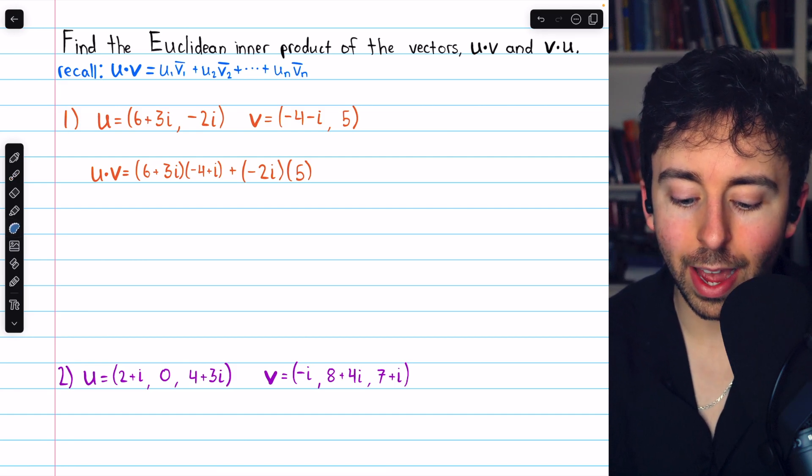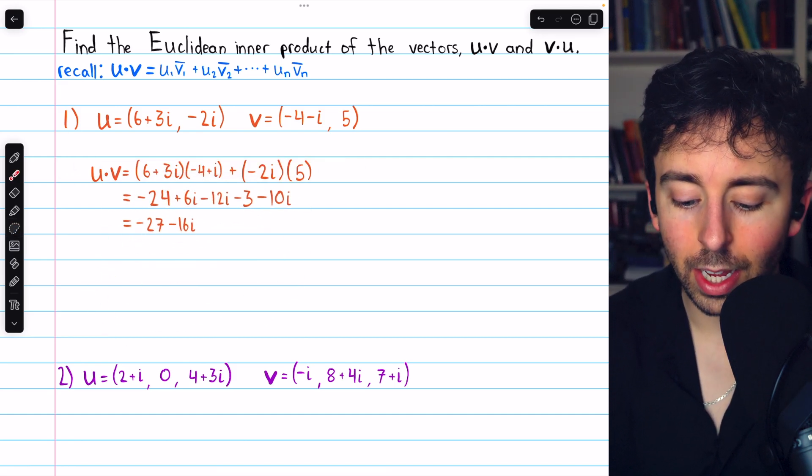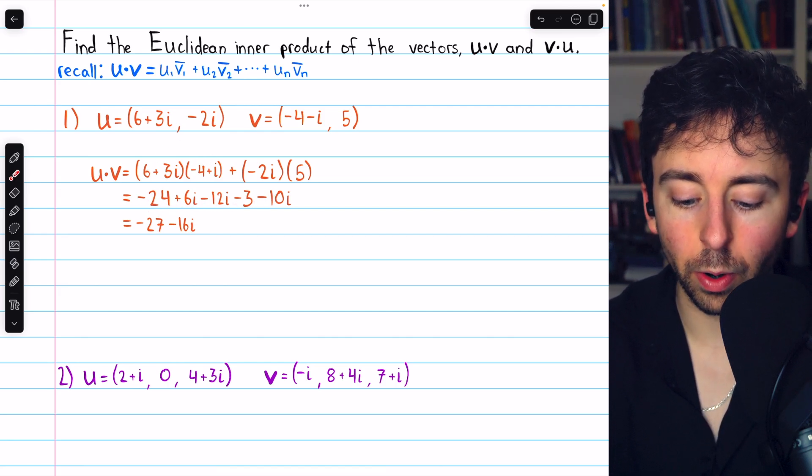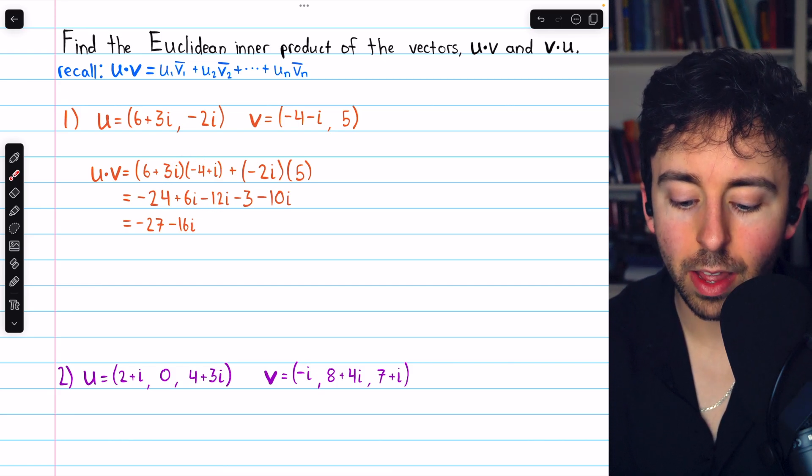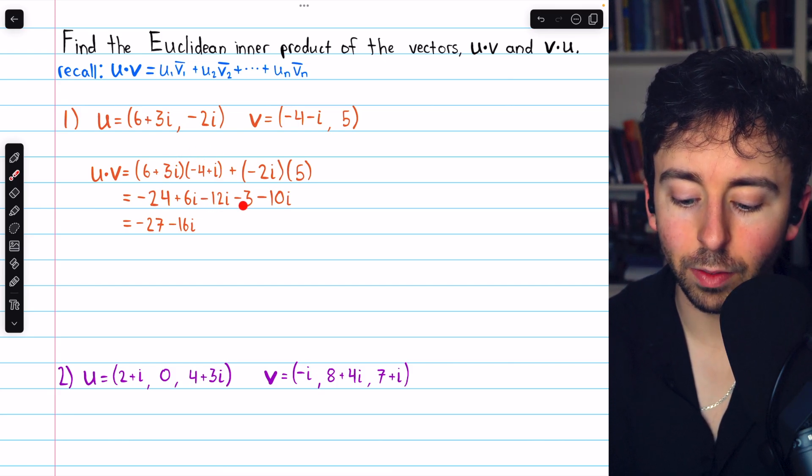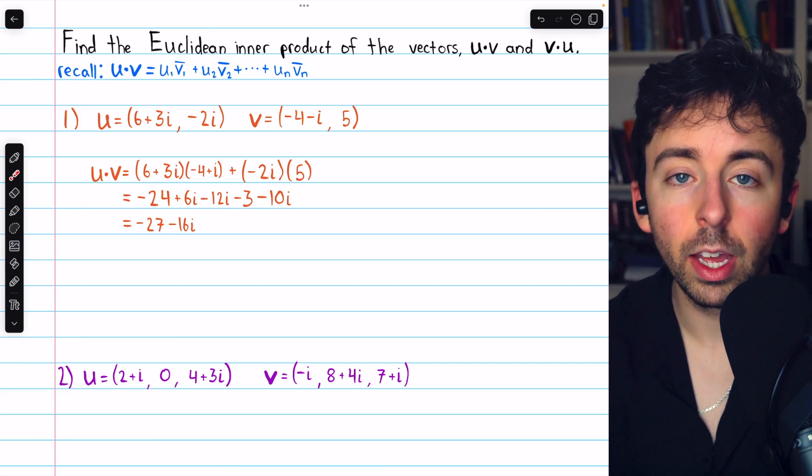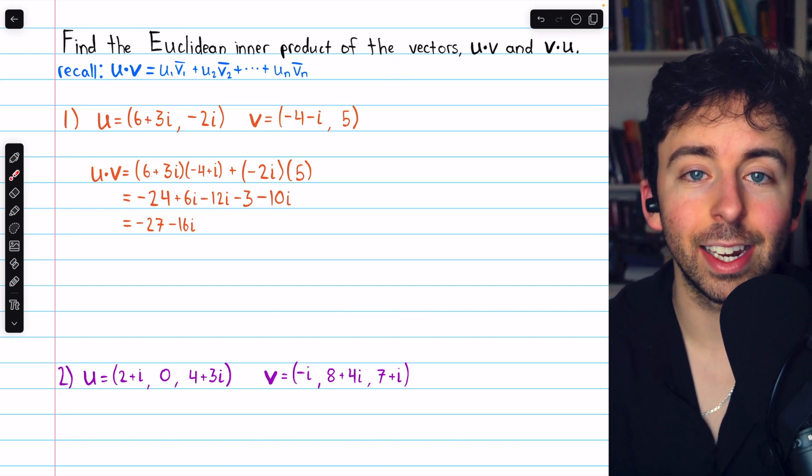Then we just have to multiply and simplify, remembering that i times i is negative one. That gets us here. We have six times negative four is negative twenty-four. Six times i is six i. Three i times negative four is negative twelve i. Three i times i is negative three. And of course, negative two i times five is negative ten i. Once we combine like terms, we get negative twenty-seven minus sixteen i.